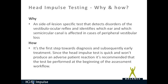First, we're going to look at why and how we do head impulse testing. The head impulse test is a site-of-lesion specific test that detects disorders of the vestibular ocular reflex and identifies which ear and which semicircular canal is affected in cases of peripheral vestibular loss. Since the head impulse test is quick and won't produce an adverse patient reaction, it's recommended that the test be performed at the beginning of the assessment workflow.